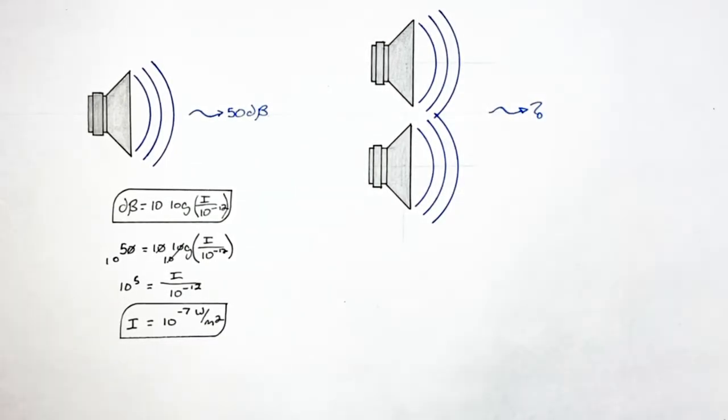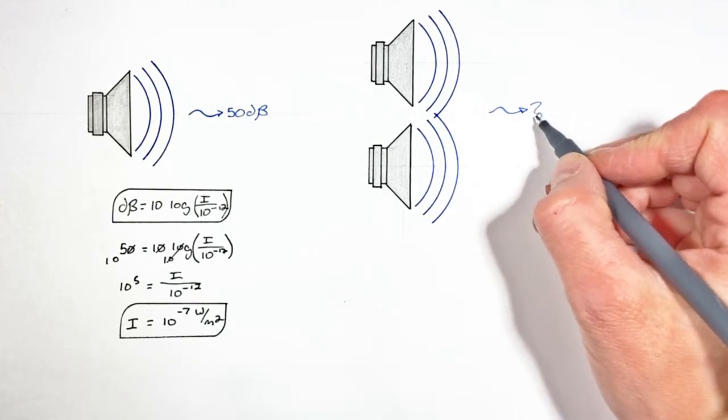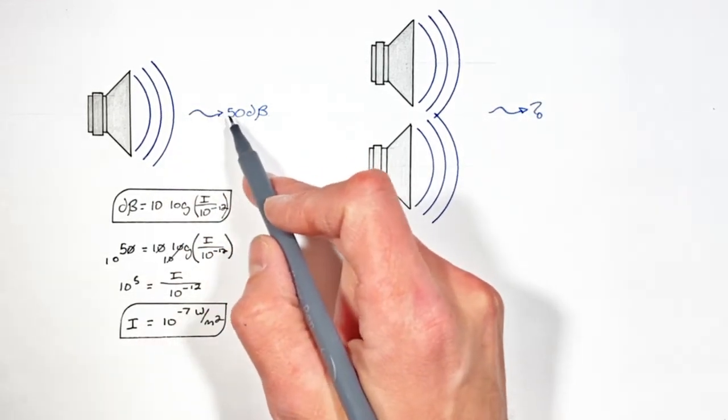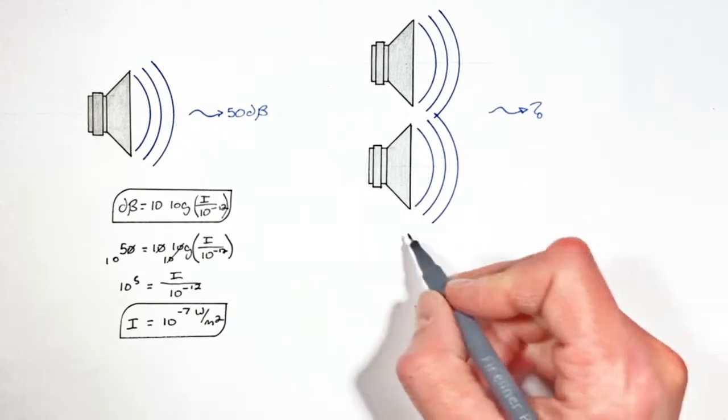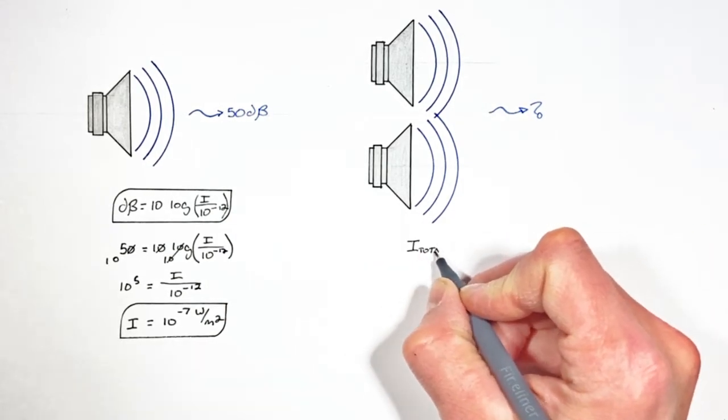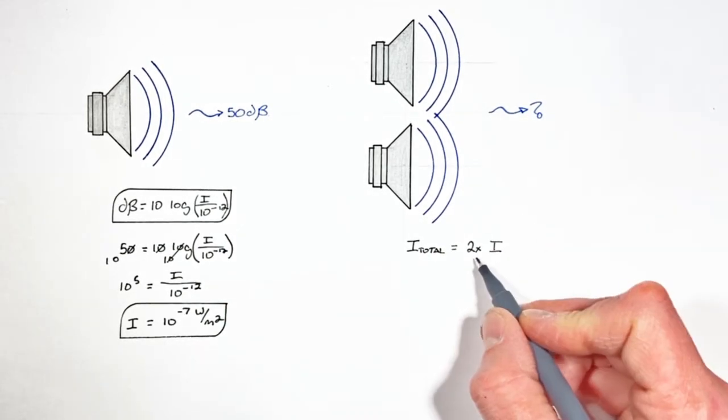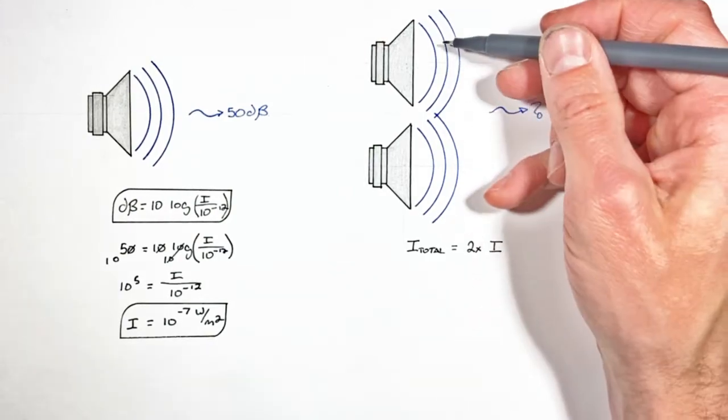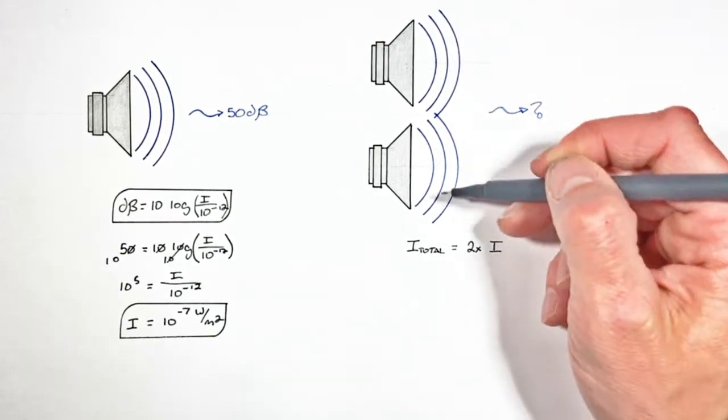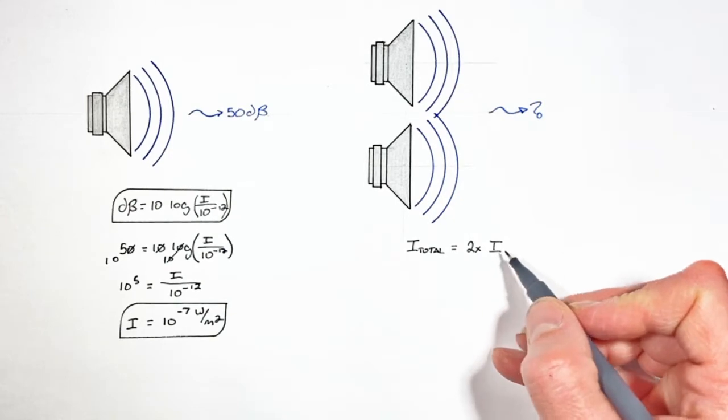So assuming our listener's at the same distance away in this situation as in this original situation, then the total intensity is going to be given by two times the original intensity, and it's double simply because we have two speakers. If we had three speakers, this would be three times the original intensity.